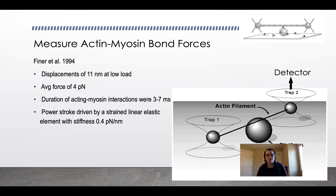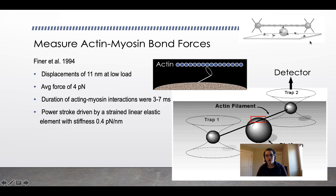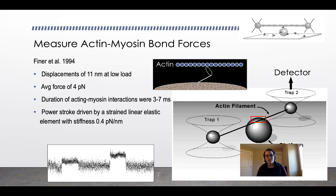Finer et al. in 1994 used a technique like this to measure the bond force between actin and myosin. They had a platform with an actin filament and two traps on either side connected to detectors — you can see the schematic in the top corner. They found an average force of about four piconewtons between actin and myosin during a contraction. They also found that the duration of actin-myosin interactions was about three to seven milliseconds, and the power stroke was driven by a strained linear elastic element with a stiffness of approximately 0.4 piconewtons per nanometer. The resulting graph is essentially a straight line, indicating that force is constant over the duration of the interaction.